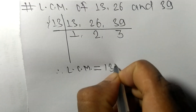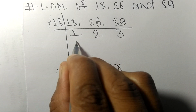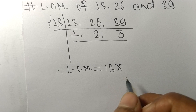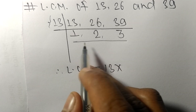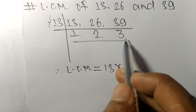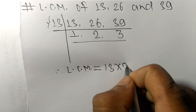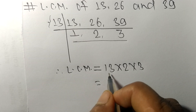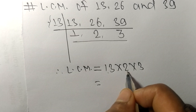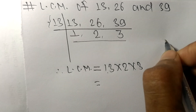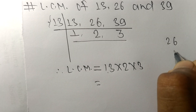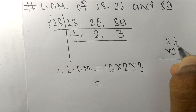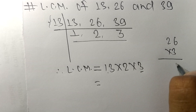From one side we have 13, and from the other side we choose the numbers greater than 1, which are 2 and 3. So 13 times 2 gives us 26, and then we multiply by 3.